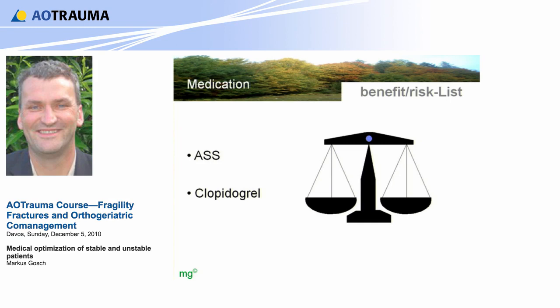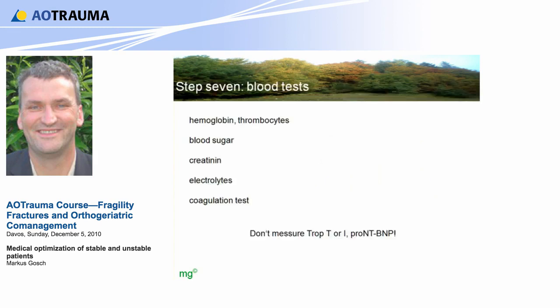Step 7: blood tests. Look for hemoglobin, thrombocytes, blood sugar, creatinine for renal failure, electrolytes, and the coagulation test. Do not measure troponin T, troponin I, or proBNP for heart failure. We measured troponin T and had many patients with slightly elevated values, causing delays while looking for cardiac problems that turned out not to exist. So don't do too much and don't do too few tests.